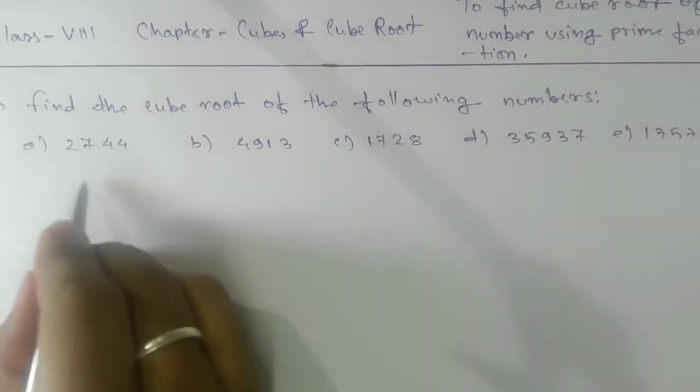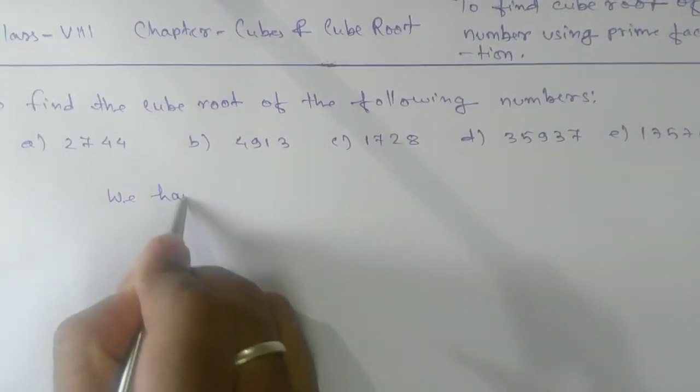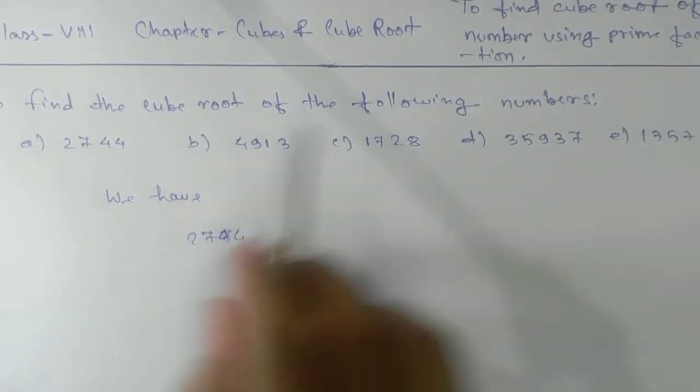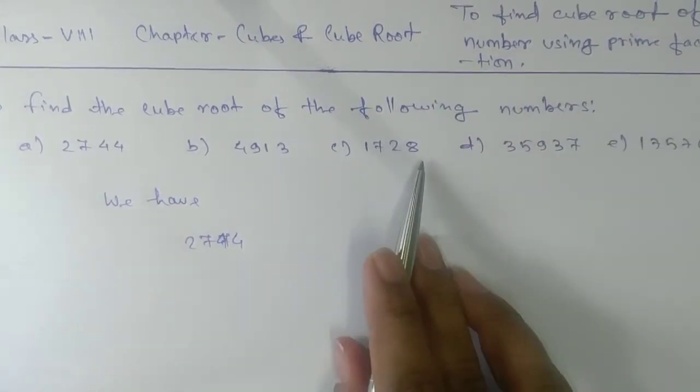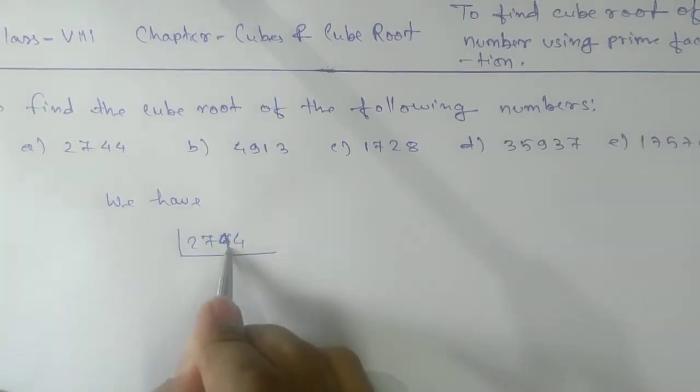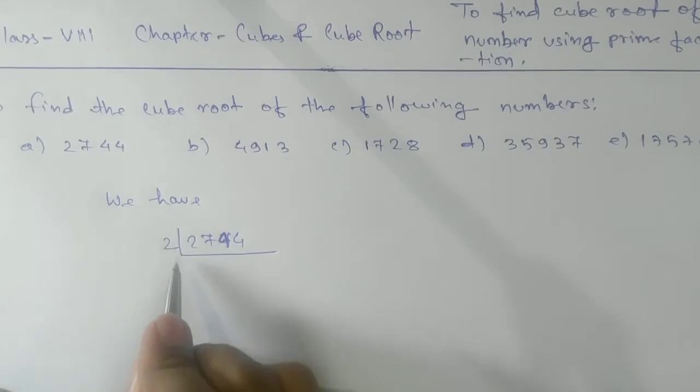So here we have a number 27744. We're going to use prime numbers to find the prime factorization form. So take 2, as you can see this is an even number. We are going to take 2.